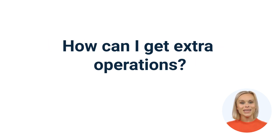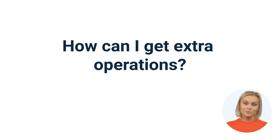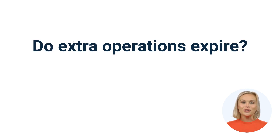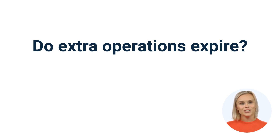Question three: how can I get extra operations? If you run out of operations, you can upgrade your subscription before the term ends, purchase extra operations in bundles, or activate the extra operations auto-purchasing feature available in Core, Pro, and Teams plans. Extra operations have the same expiration rules as pre-purchased operations — they expire after one month for monthly subscriptions, or at the end of one year for annual subscriptions in Pro and Teams plans.